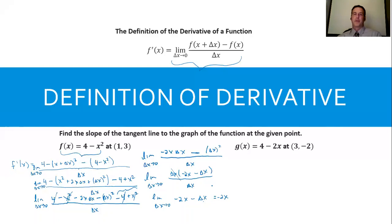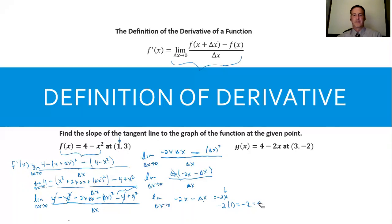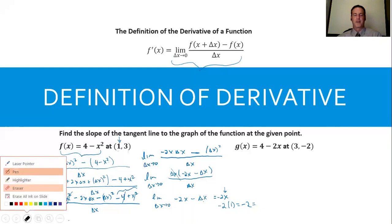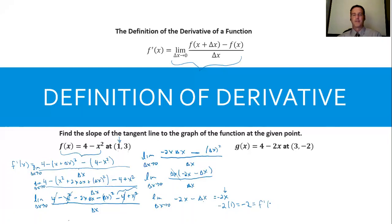I'm left with negative 2x minus delta x, and as delta x goes to 0, I'm left with negative 2x. Now, the only thing left is to address the actual slope of the tangent line at the point (1, 3). Since I only have negative 2x, I take negative 2 multiplied by 1, which gives me negative 2. So f prime of 1 equals negative 2 — it's not about x anymore, it's about the specific value x equals 1.